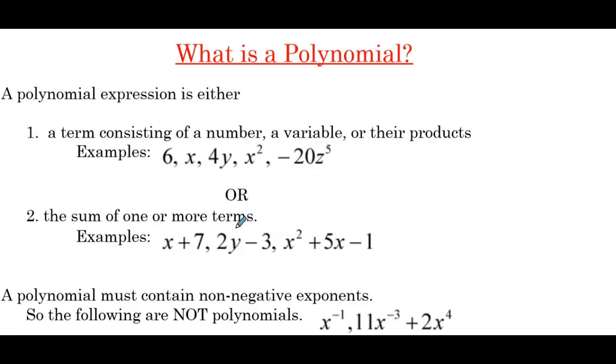And then if we take single term polynomials, and we combine them with either addition or subtraction, we've created a larger polynomial. And that's what we have here. This polynomial has two terms, x and 7 by themselves would be single term polynomials, and we've combined the two with addition.